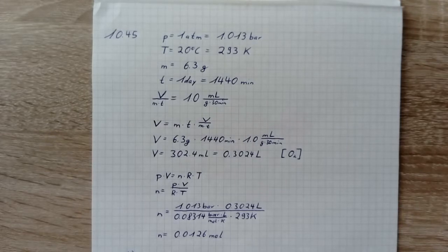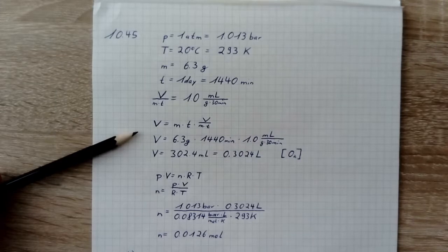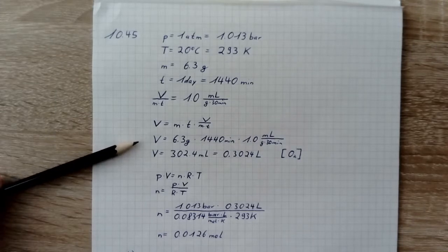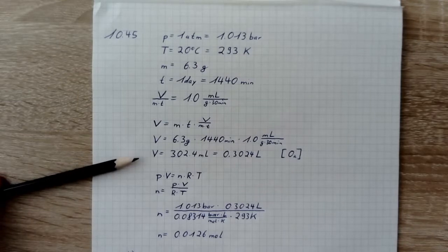At first we need the volume of the oxygen so we use this formula. We insert the values and get a volume of 302.4 ml which is equal to 0.3024 liters.